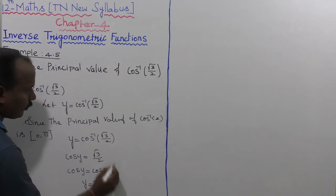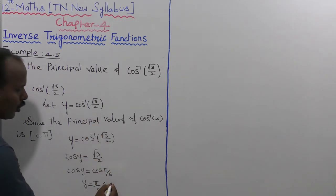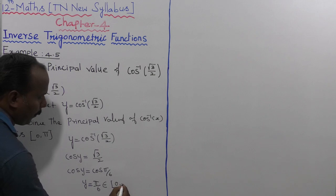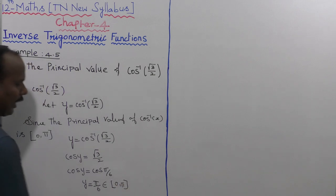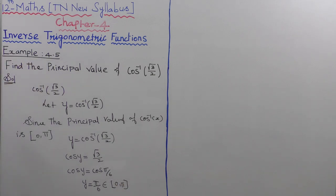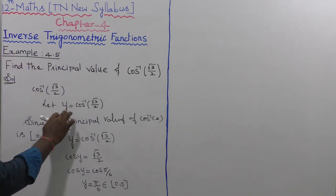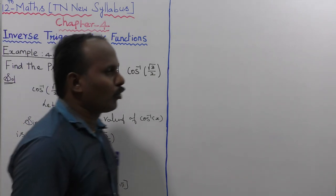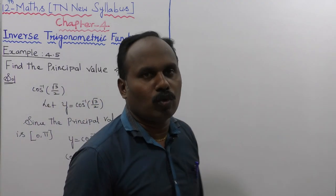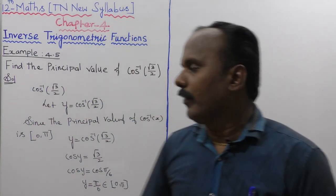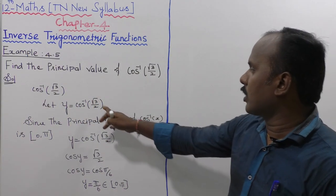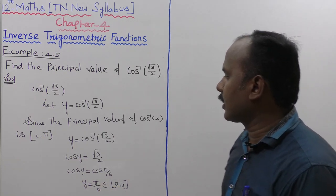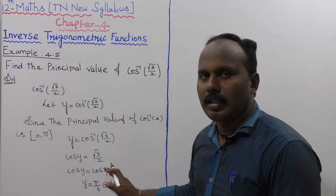y equals π by 6 belongs to the closed interval 0 to π, so the value exists. Therefore, the principal value of cos inverse of root 3 divided by 2 is equal to π by 6. That's all.